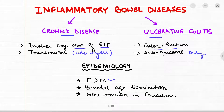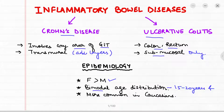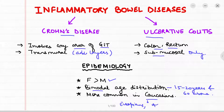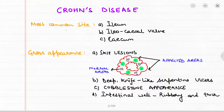Coming to the epidemiology of IBDs, we see a female preponderance — females are more commonly involved compared to males. There is also a bimodal age distribution with two peaks: one during the age group of 15 to 20 years and the other in the elderly, 60 and above. IBD is also more common in Caucasians, which includes Europeans and parts of Western, Central, and South Asia.